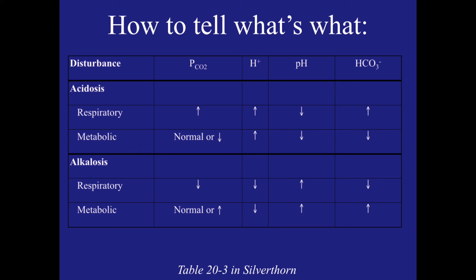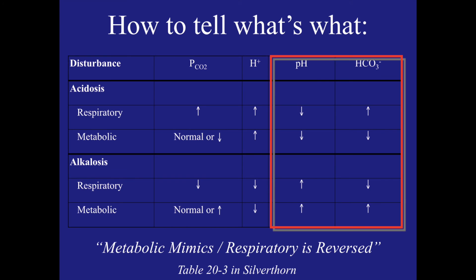When looking at results from a patient, how can we tell which disorder a patient has? Focus in on the last two columns on this chart showing the pH and the levels of bicarbonate. It is easy to tell whether a system is in acidosis or alkalosis — the pH tells us that. But when we compare the high or low level of bicarbonate to the high or low pH, remember the mnemonic: metabolic mimics, respiratory is reversed. In metabolic disorders, a low pH would also have a low bicarbonate concentration and a high pH would have a high bicarbonate concentration. The arrows, however, would go the opposite way for respiratory disorders.